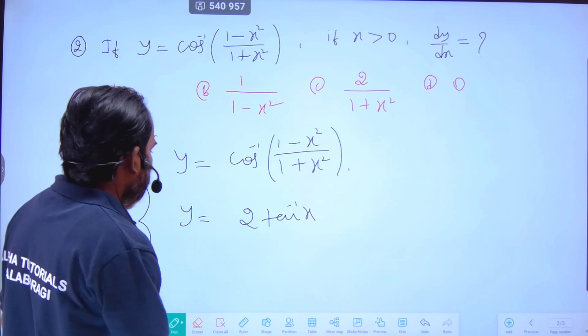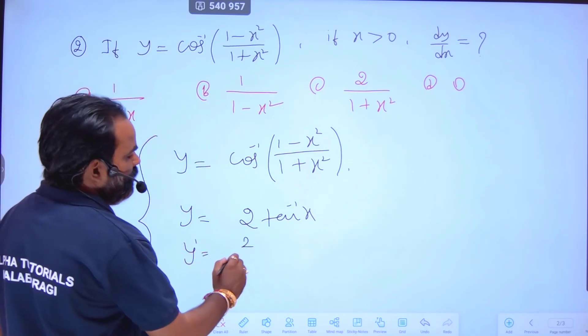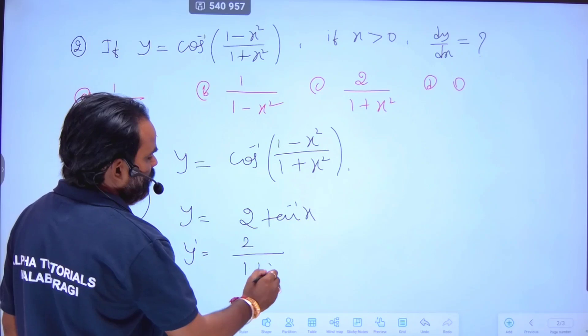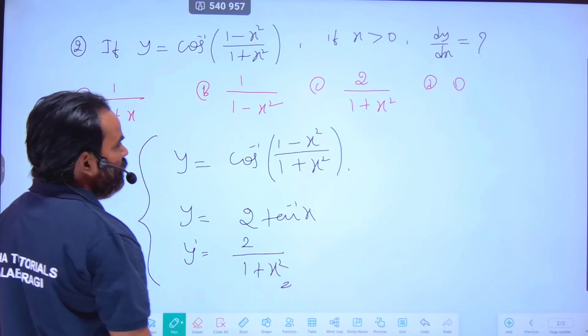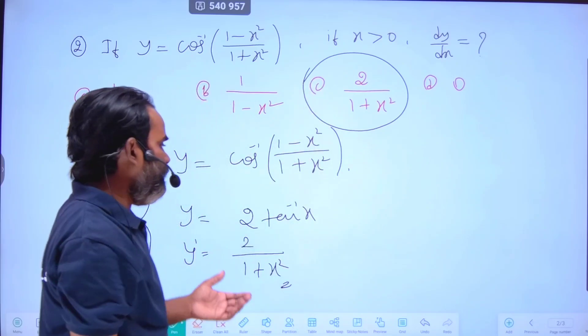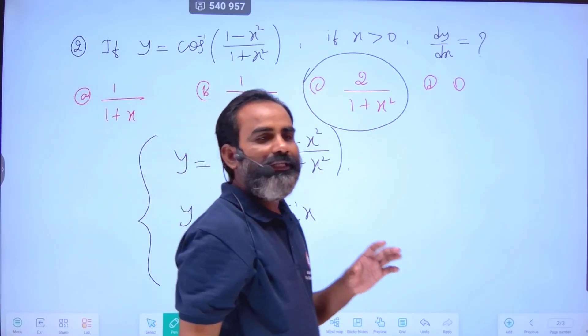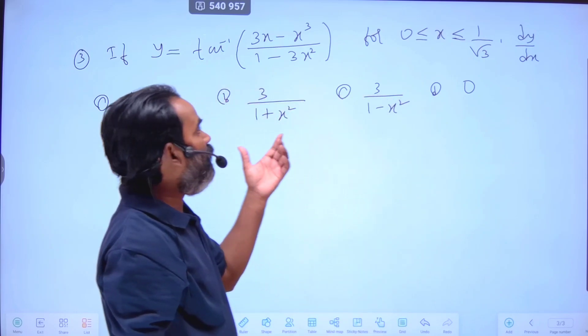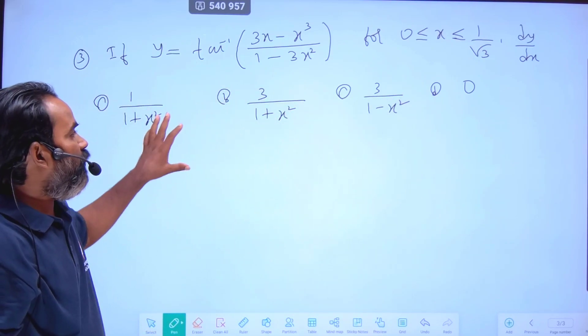The differentiation of this will be 2 times the tan inverse x differentiation, which is 1/(1+x²). So option D is correct. That is the same thing - you have to remember this formula.